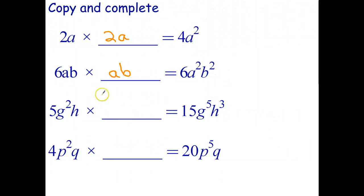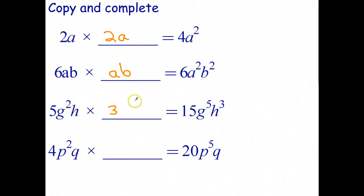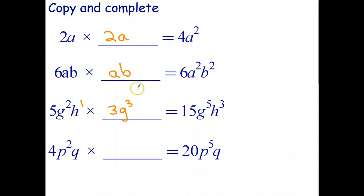Moving on: 5 times what gives 15? The answer is 3. Then g² times what gives g⁵? Using index law 1 — add indices — 2 plus what gives 5? The answer is g³. Finally, h¹ times what gives h³? The answer is h². Check: 5×3=15, g²×g³=g⁵, h¹×h²=h³.